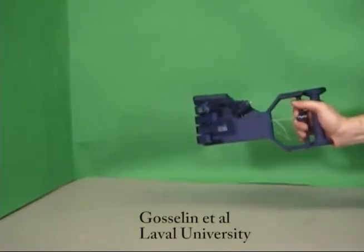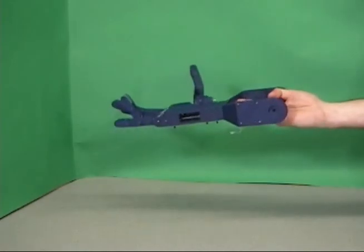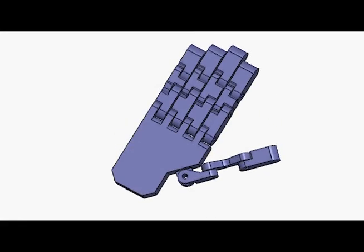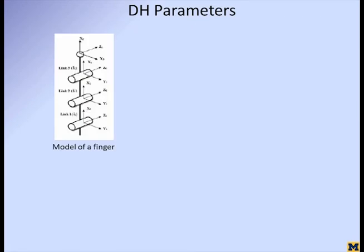This hand uses only one actuator to control 15 degrees of freedom. The students at the University of Michigan tried to simulate a simple version of this hand. Individually, the fingers can be modeled easily using DH parameters. Each finger can be considered to be a planar link robot with different link lengths.